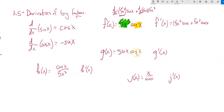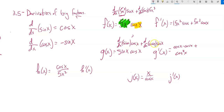Similarly, g(x) = sine x times cosine x. This is a product, so we use the product rule: derivative of the first times the second, plus derivative of the second times the first. Derivative of sine is cosine, so this is cosine times cosine, which I can write as cosine squared. Plus derivative of cosine is negative sine, times sine — so this becomes minus sine squared. There's the derivative of g.